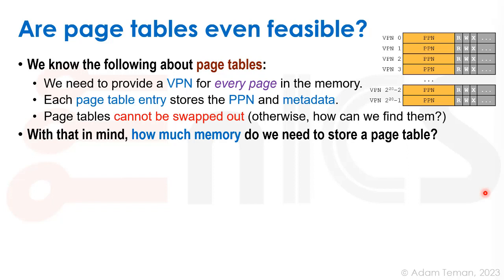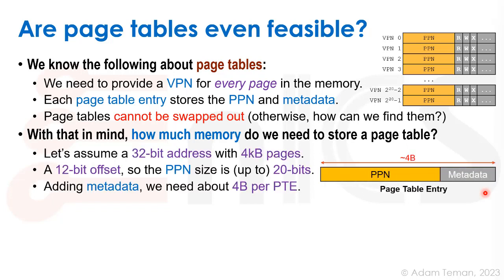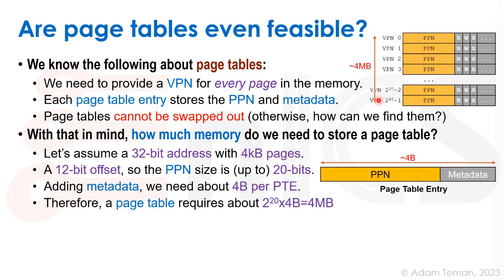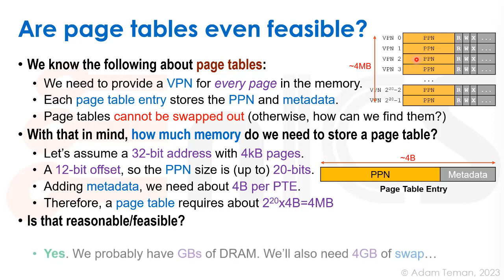How much memory do we actually need to store a page table? Let's assume a 32-bit address with four kilobytes of data. If we have a 12-bit offset, the PPN size is about 20 bits, so we need to store 20 bits per entry with metadata. We can take four bytes — 32 bits will probably be enough to store a page table entry. So our page table entries are each four bytes long. Therefore, to have all 2^20 virtual page numbers each four bytes long, we need four megabytes to store one page table.